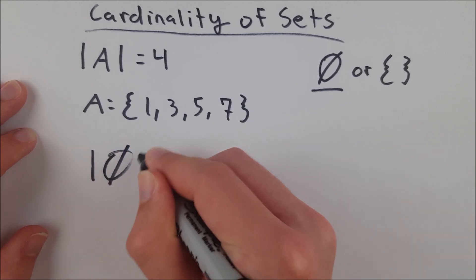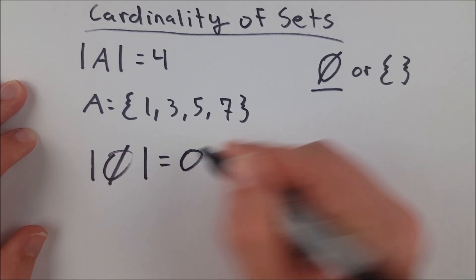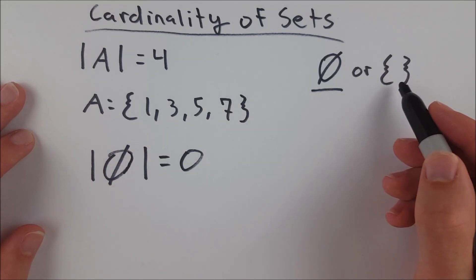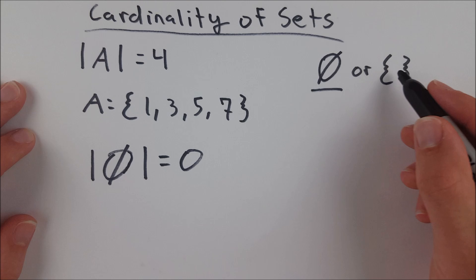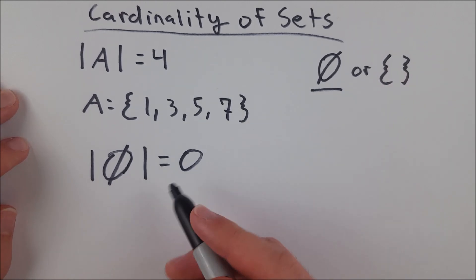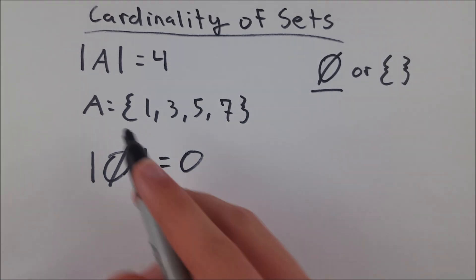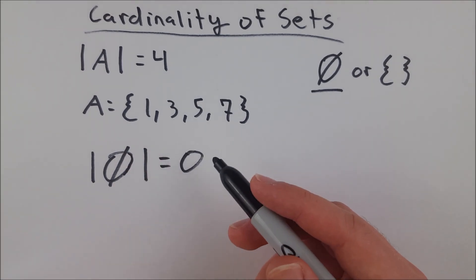The cardinality of the empty set is 0. That's what makes it the empty set is that it has no elements, which is of course why it's written like that sometimes. It's just a set with no elements in it. So the cardinality of the empty set is 0. That's what cardinality is. The cardinality of a set is the number of elements in the set.